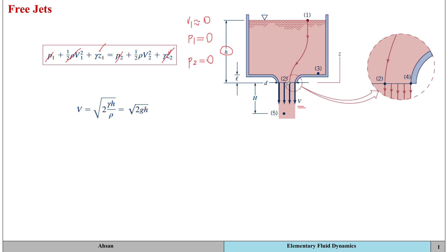You could also get this same equation by taking points 3 and 4 and analyzing the situation using Bernoulli's equation. For that, z4 would be equal to 0 and z3 would be equal to L. Velocity at point 3 would be equal to 0 as well because it is far away from the nozzle. The pressure at point 3 can be found through simple hydrostatics — pressure equals γH — so P3 equals ρg multiplied by the elevation (H minus L).